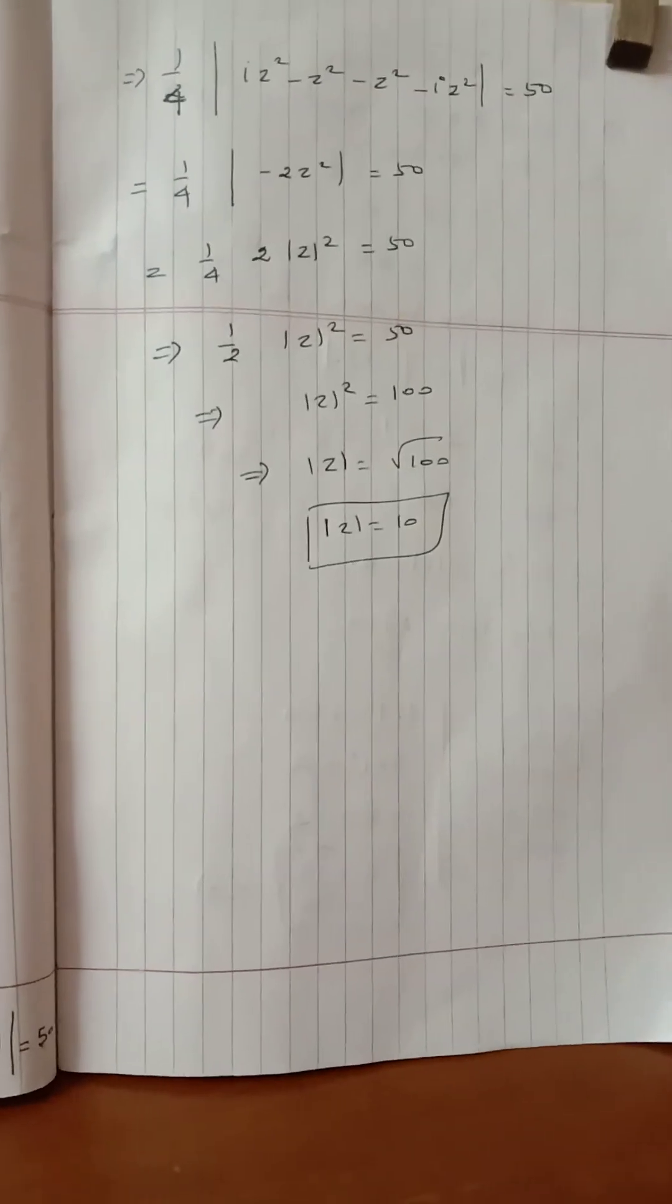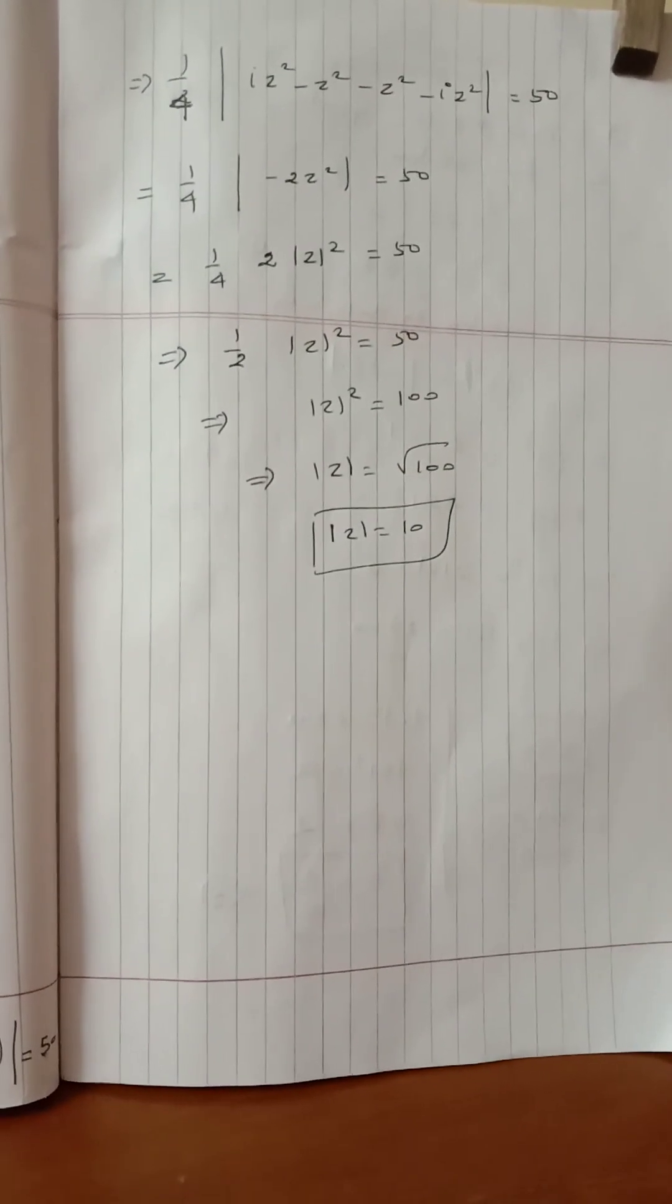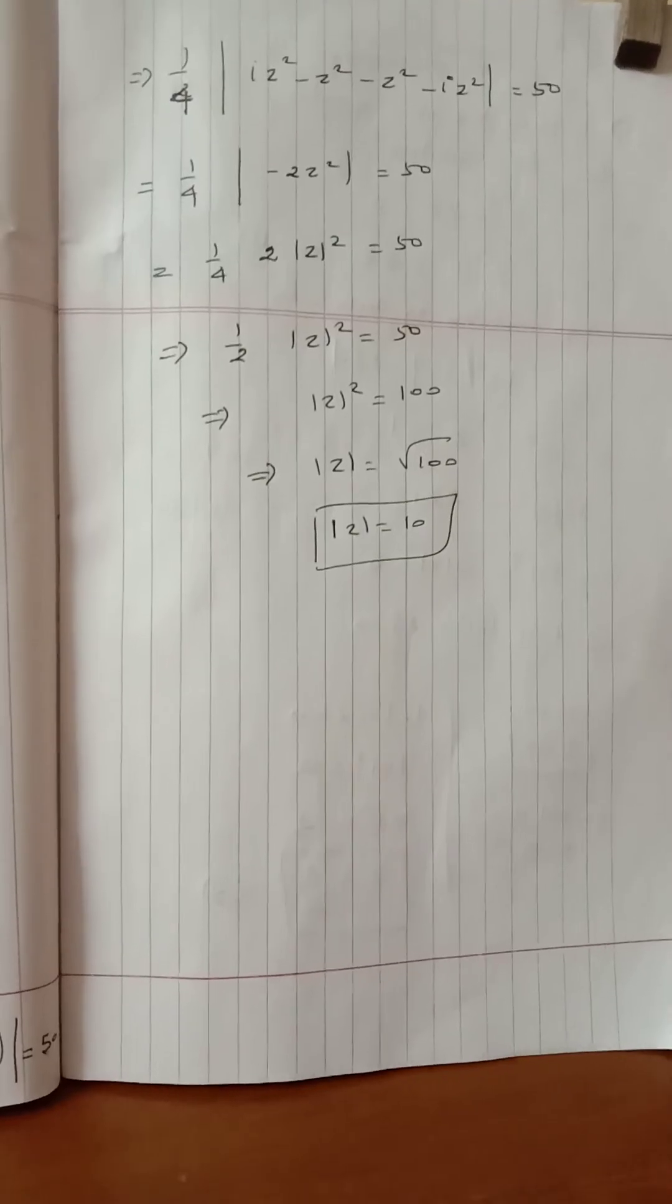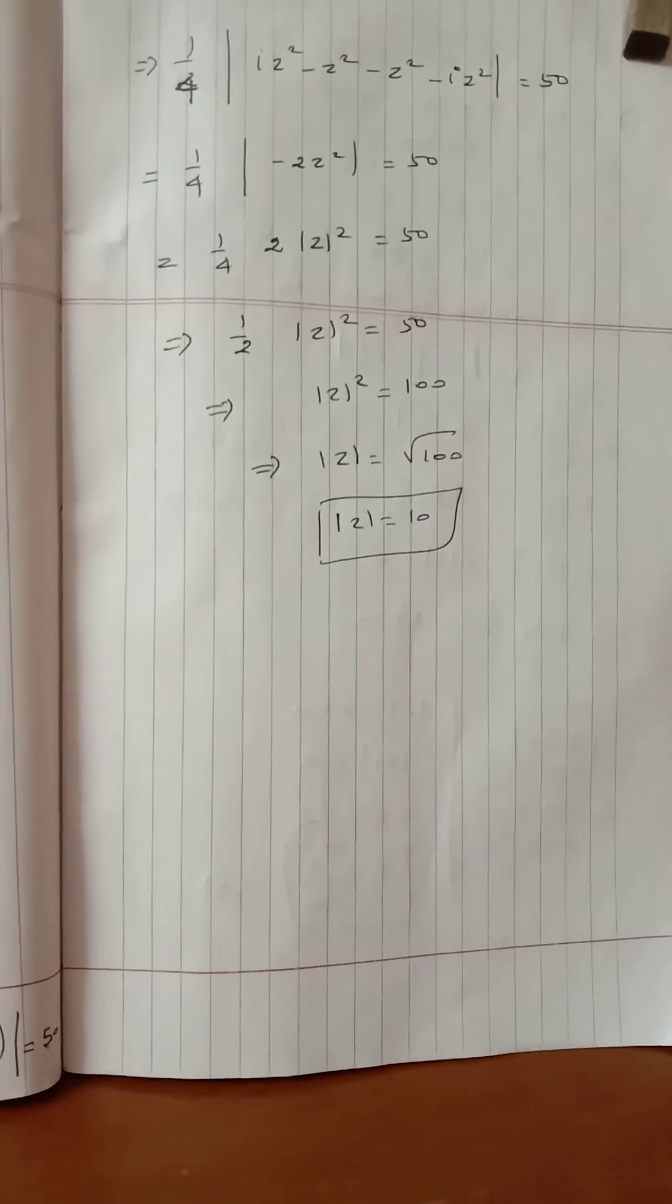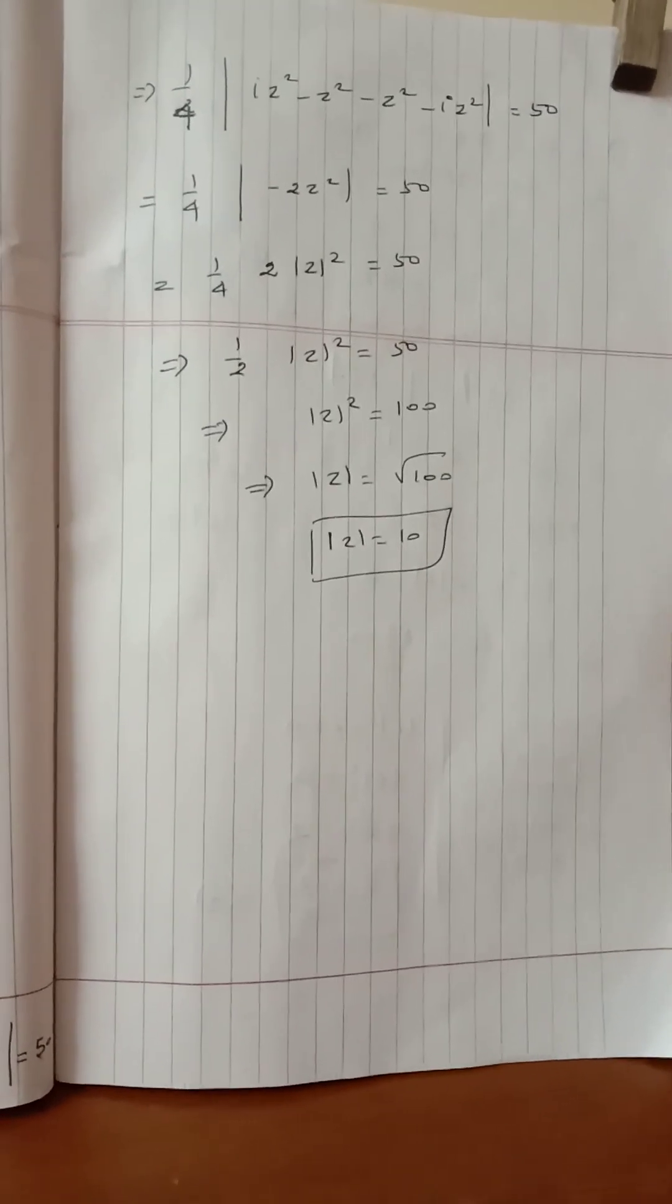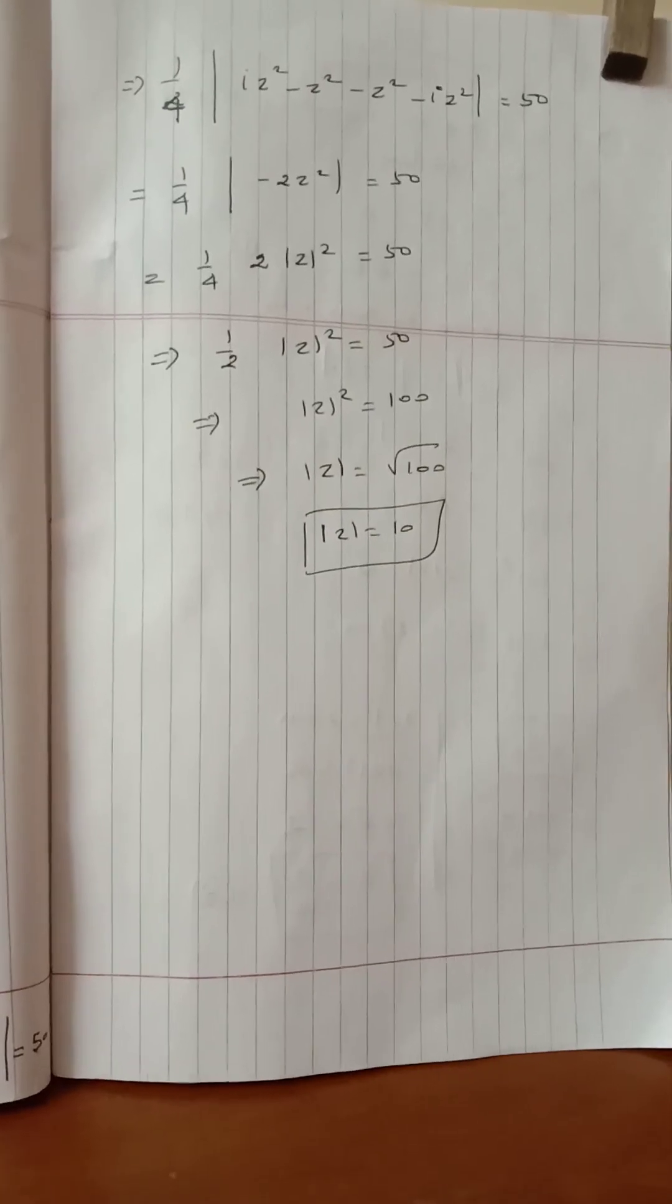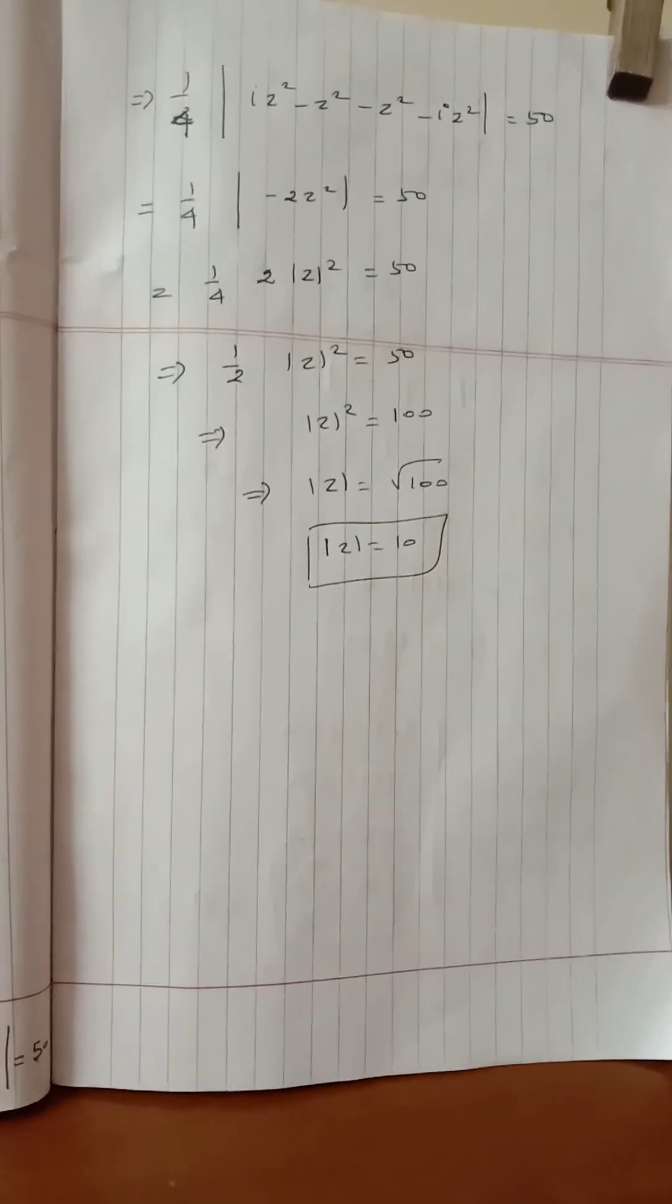This gives 1/4 into modulus of iz square minus z square minus iz square equals 50. When iz square minus iz square cancel and minus z square minus z square combine to minus 2z square.